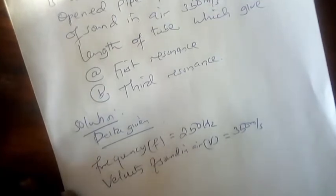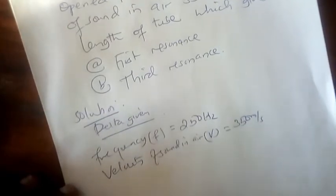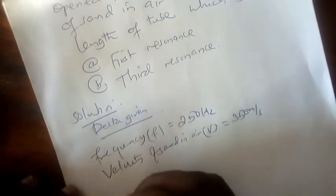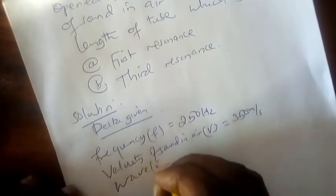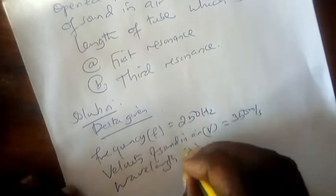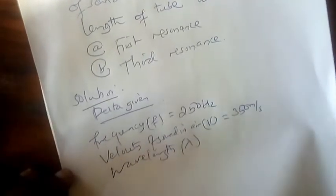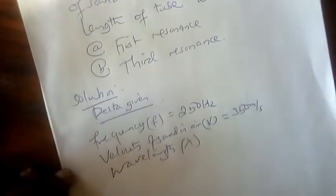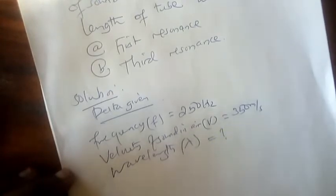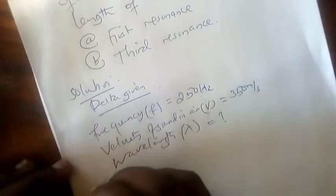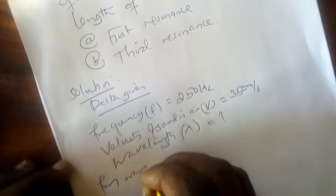In order for us to get the length, the first thing we must have is the wavelength. So what we will do is first find the wavelength. Once we get the wavelength, it will be easier for us to substitute into those formulas for first resonance and third resonance. From the wave equation.